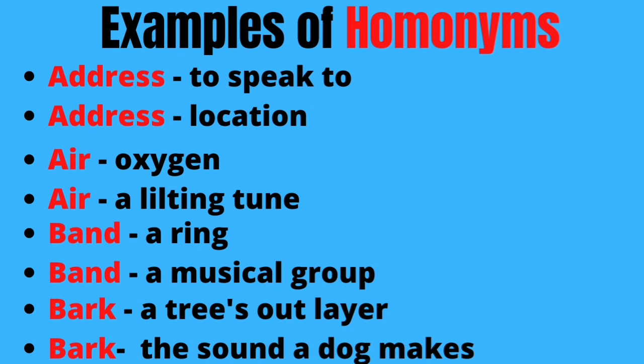Examples of homonyms — remember, homonyms are words that spell the same, pronounce the same, but have different meanings. The word 'address': address means to speak to someone, and it also means the location of somewhere. They are spelled the same, they pronounce the same, but they have two different meanings.